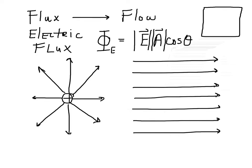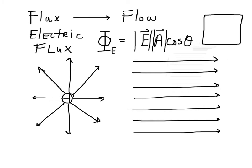There's something important about area: if we take an area element and want to make it a vector, we draw a normal to the surface. If we draw a vector in the plane it could point in any direction, but the normal to the surface — a vector coming straight out of the screen — tells us the direction the area is facing. The direction of an area element as a vector is always the direction it's facing, meaning normal or perpendicular to the surface.